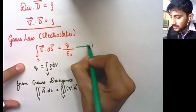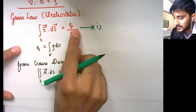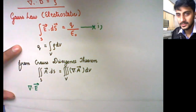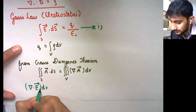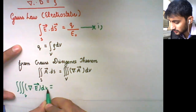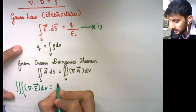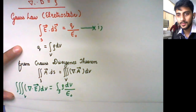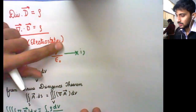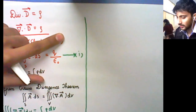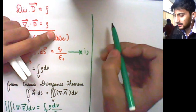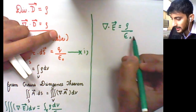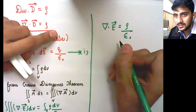This equation can also be written as: the volume integral of divergence of electric field dV equals Q by epsilon naught, which is the integral of rho dV by epsilon naught. Comparing the terms, we find that divergence of electric field equals rho by epsilon naught, and this is also a form of Maxwell's first equation.